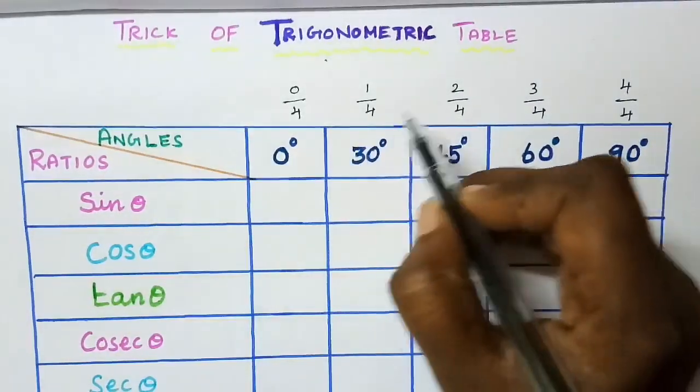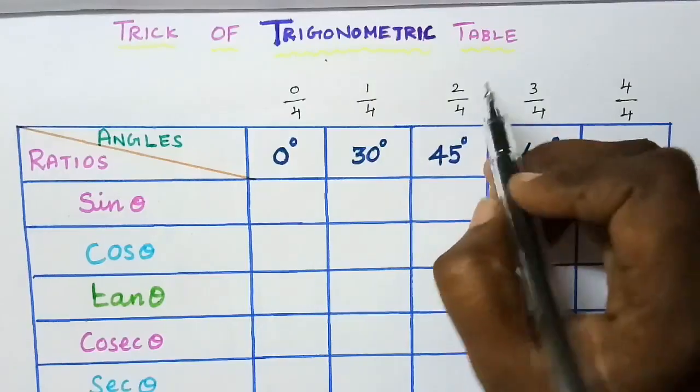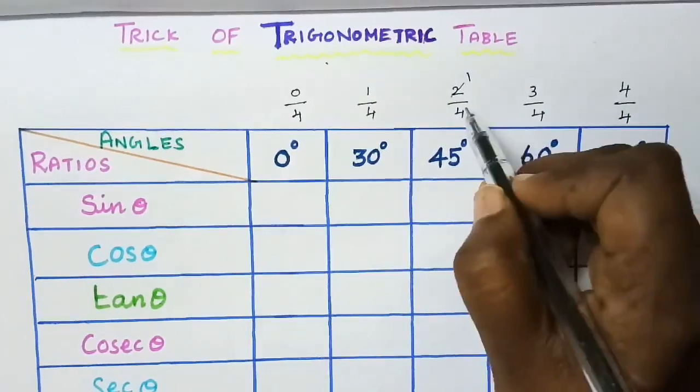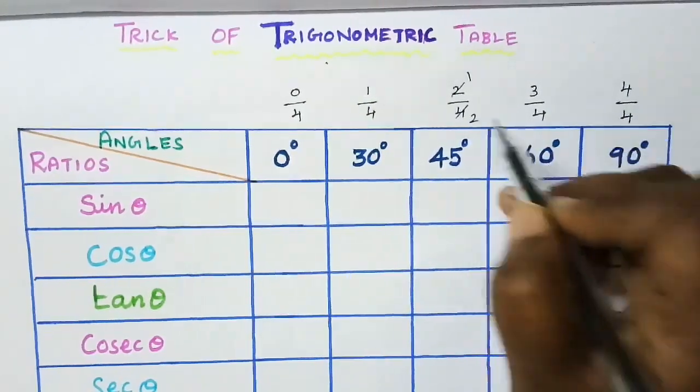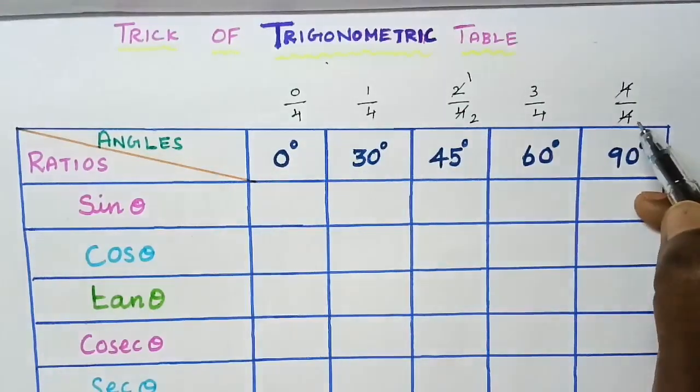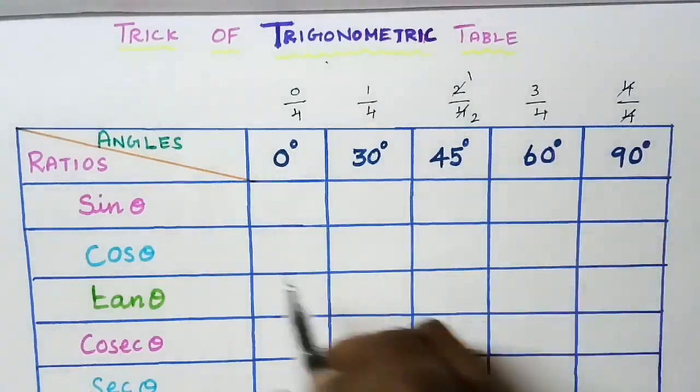Now simplify these fractions. We get 1, 2 over 4 simplifies to 1 over 2, 2 over 4 simplifies to 1 over 2, and 4 over 4 equals 1.